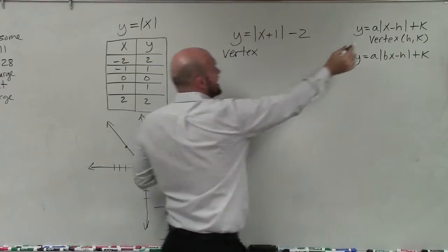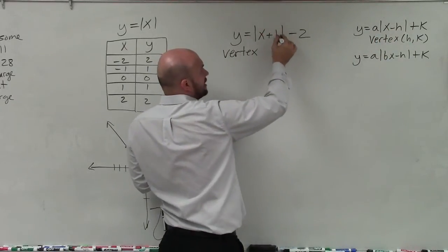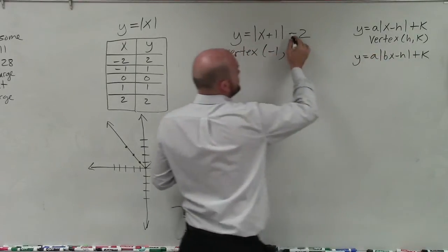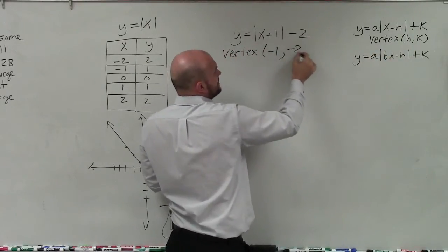So remember it's x opposite of h. So x opposite of 1 would be negative 1, comma, and then it's just plus k, which would be plus a negative, so it would be negative 2.